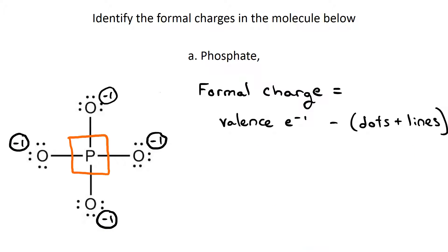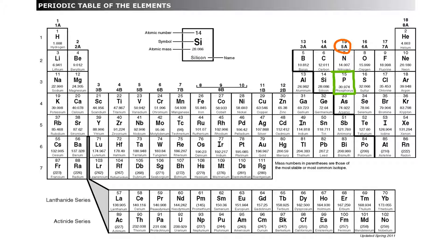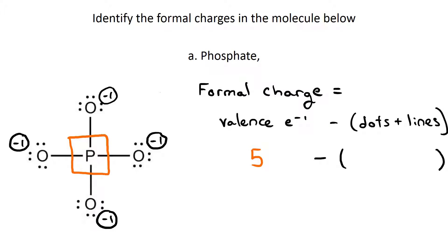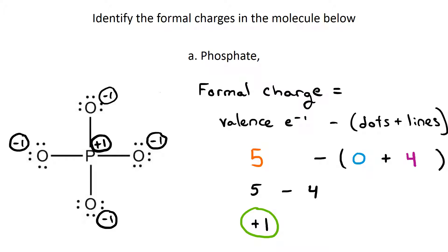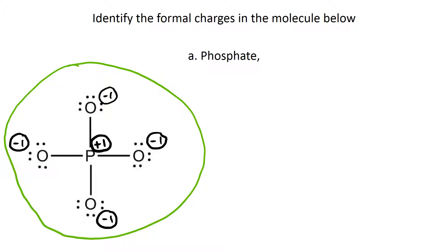Let's try to do the same thing with phosphorus. Phosphorus is in column 5A, so it has five valence electrons. There are zero dots around the phosphorus and four lines. So the formula for formal charge gives us five minus four, which is a plus one charge on that phosphorus. That is all of the formal charges on phosphate.